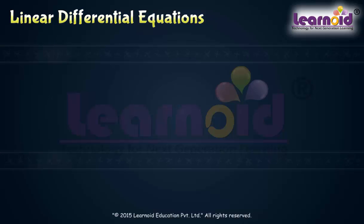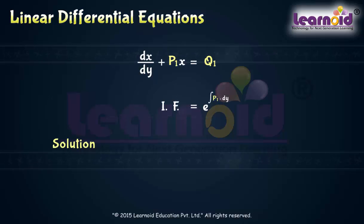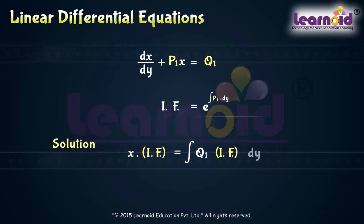If the equation is of the form dx/dy plus p1·x equals q1, then the integrating factor is e raised to the power of the integral of p1·dy, and the solution becomes x times the integrating factor equals the integral of q1 times the integrating factor plus a constant.